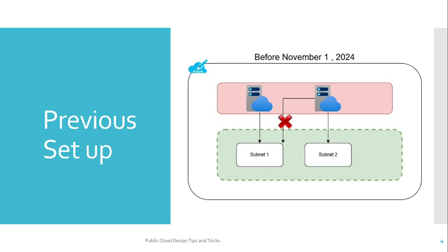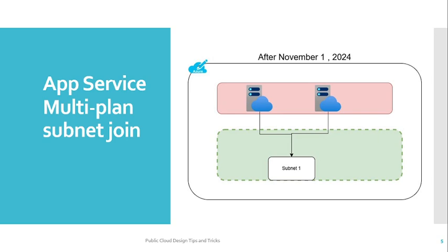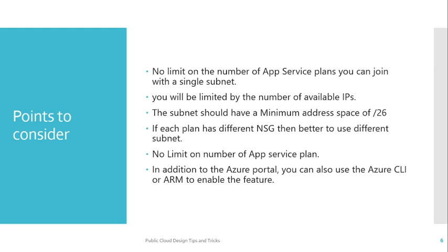Sharing a virtual network subnet with multiple app service plans was not previously possible. In the diagram, you can see that App Service Plan 1 is integrated with Subnet 1, and integrating that same Subnet 1 with another app service plan was not allowed — App Service Plan 2 had to use a separate Subnet 2. That was the limitation before November 1st, 2024. After November 1st, 2024, multiple app service plans can share the same subnet, making virtual network integration more efficient.